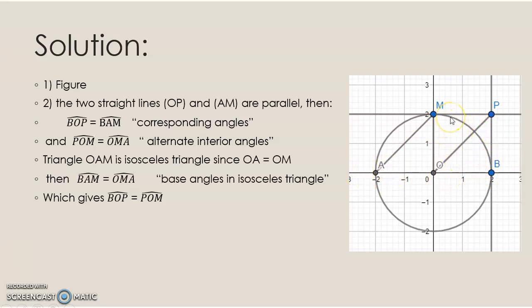We have angles POM and OMA are alternate interior angles. Also, triangle OAM is isosceles since OA equals OM, radii of the same circle.